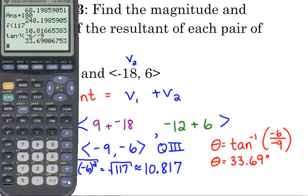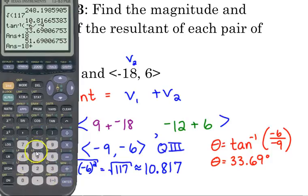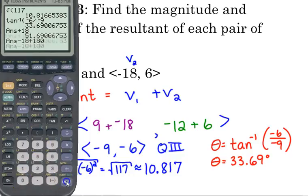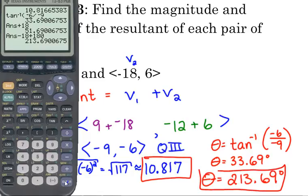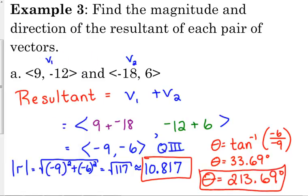Is that in the third quadrant? Nope. It's a reference angle. In the third quadrant, we add 180 to our reference angle. Oh, that didn't work, because I left off the 0. 213. The magnitude is 10.817. The angle is 213.69.